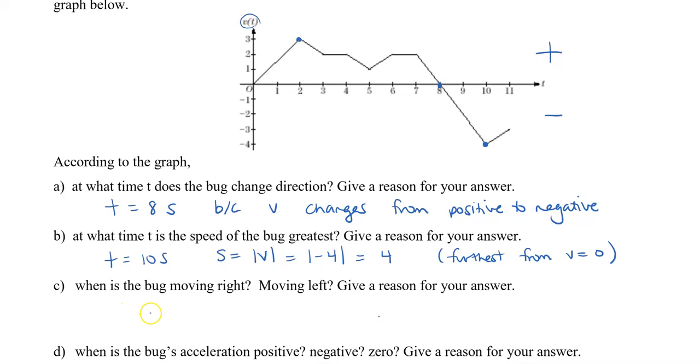Part c, when is the bug moving right and when is the bug moving left? The bug is moving right when the velocity is positive. So, this happens from 0 to 8 seconds because we have a positive velocity. And then, from 8 to 11 seconds, we have a negative velocity. So, the bug is actually moving left.